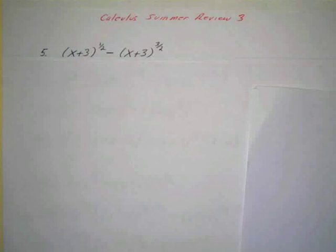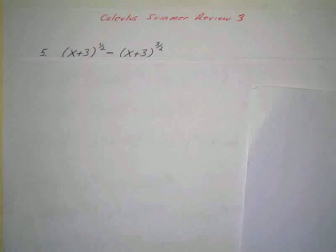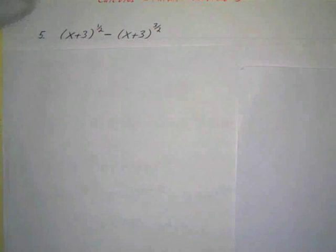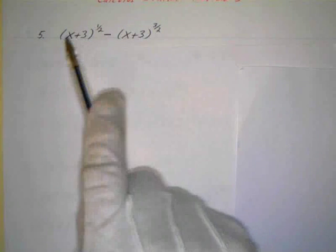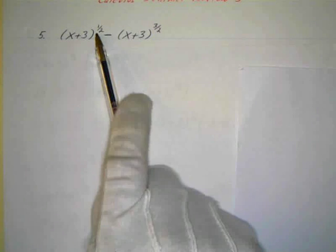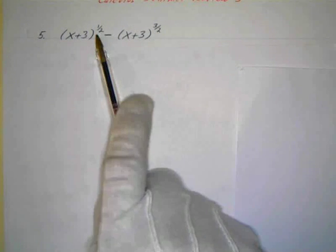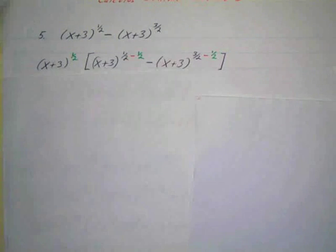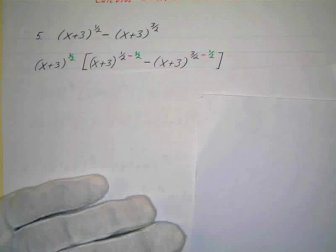Okay, so more summary — view three, problem five. We've got some binomial bases, so this gets a little more complicated, but we do see these once in a while. We have a common factor of x plus three, and we have a one-half and a three-halves. We use the least power, so one-half is smaller than three-halves — that's what we factor out. We do the same thing except we're dealing with binomial factors.